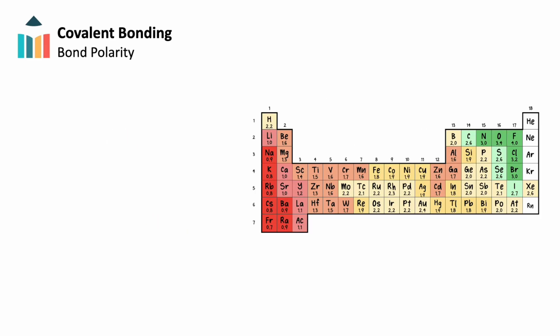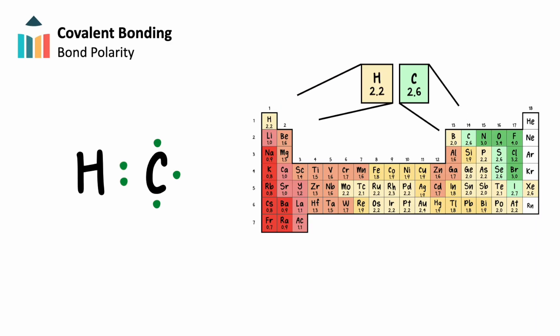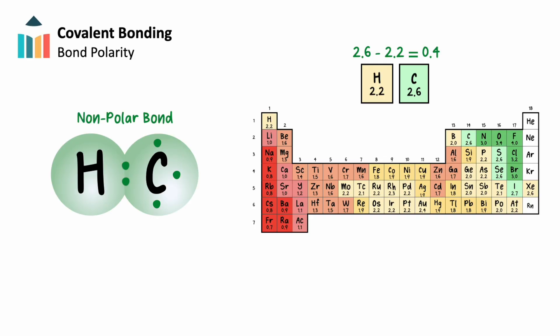Let's take a close look at some covalent bonds and see how electrons are being shared in different ways. A bond between carbon and hydrogen would be an example of a nonpolar covalent bond. Carbon has an electronegativity value of 2.6, while hydrogen has a value of 2.2. This gives a difference in electronegativity equal to 0.4. While carbon will have a slightly stronger force of attraction, the two electrons in this bond are shared relatively fairly, creating a nonpolar covalent bond.